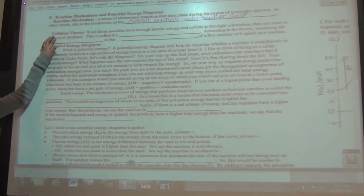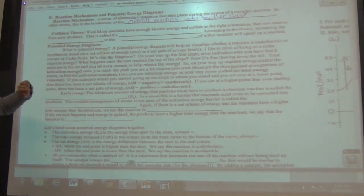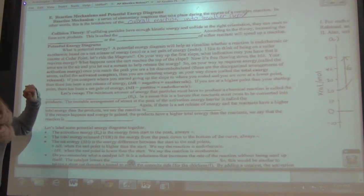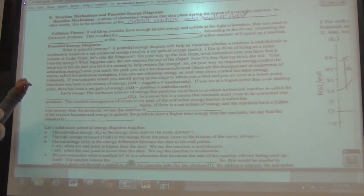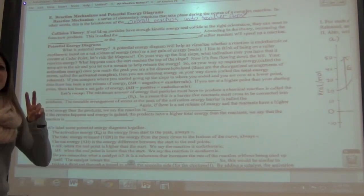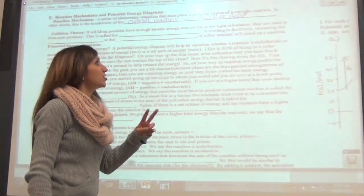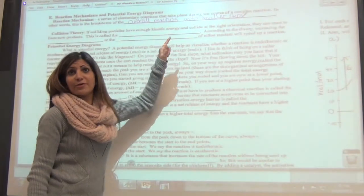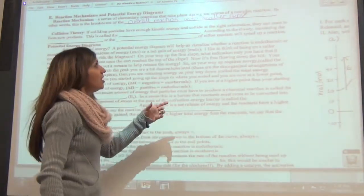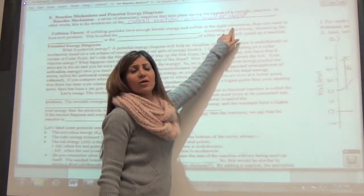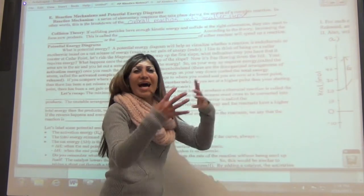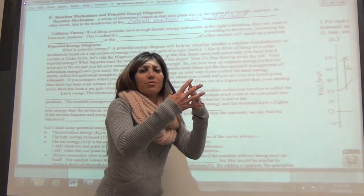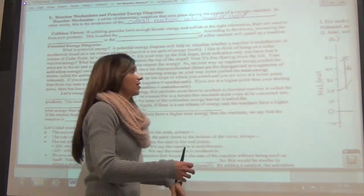There is what is called the collision theory. If colliding particles have enough kinetic energy and they collide at the right orientation, then they can react to form new products. It's based on two major things: whether they have the right amount of energy — in other words, activation energy — and whether they're colliding at the right places to form products.